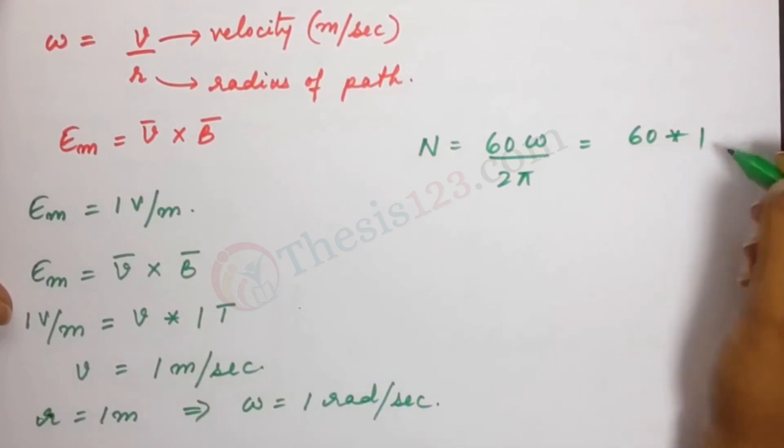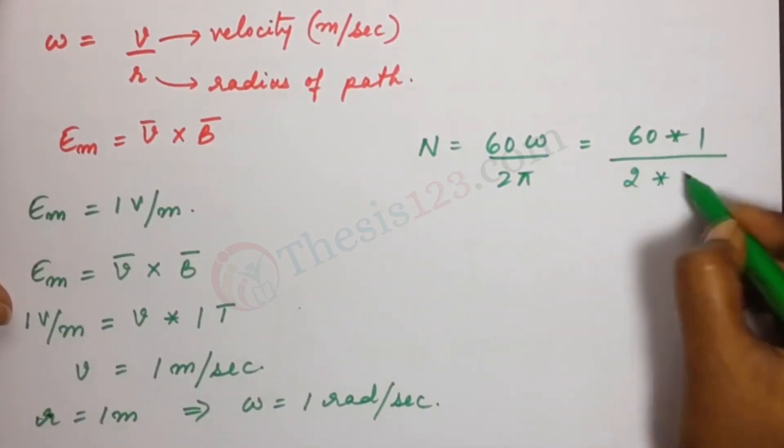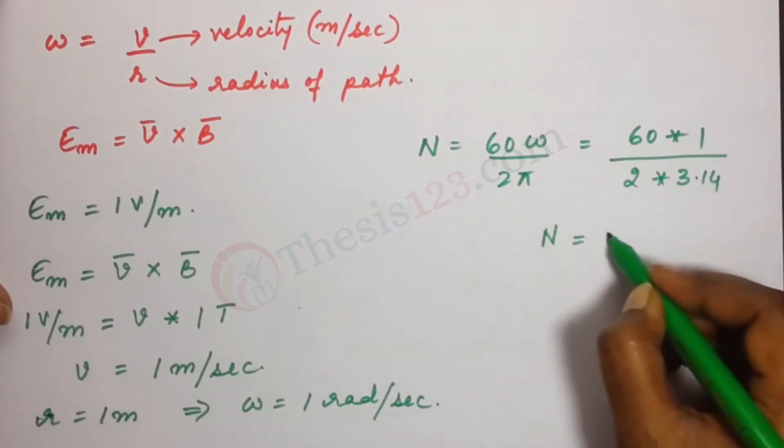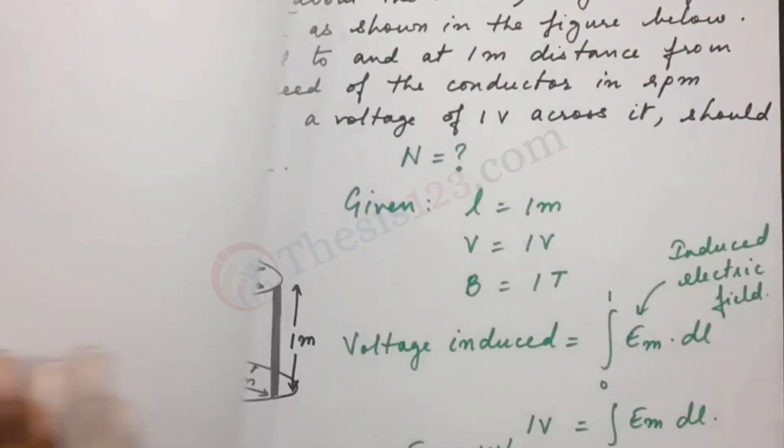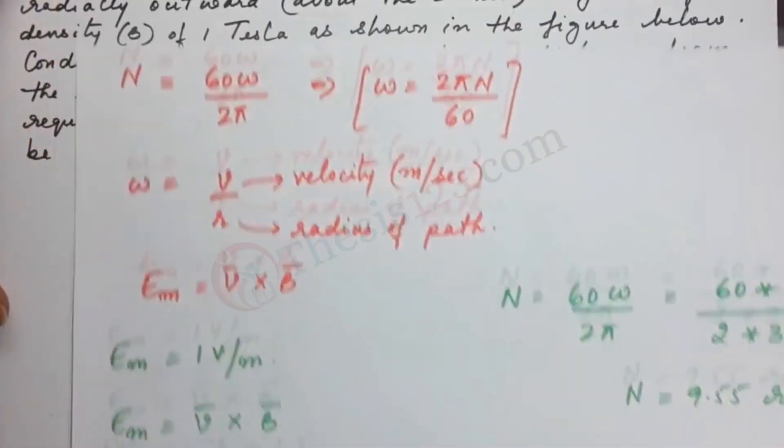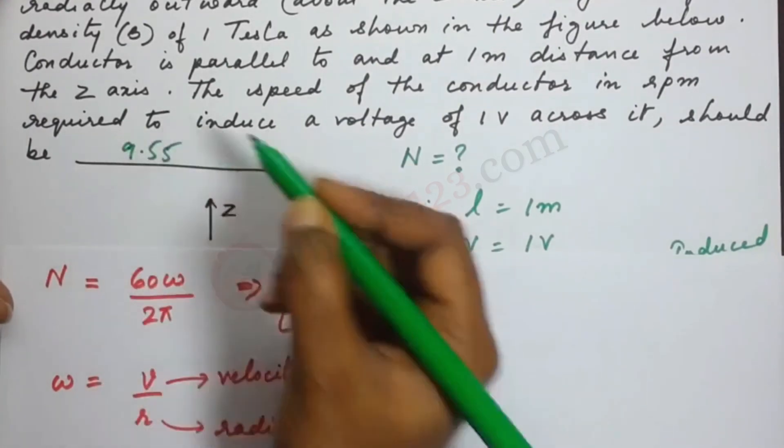60 into 1, 1 radian per second divided by 2 into 3.14. So the speed would be 9.55 per minute. So this is the final answer: 9.55 RPM.